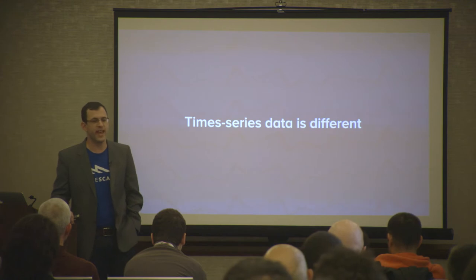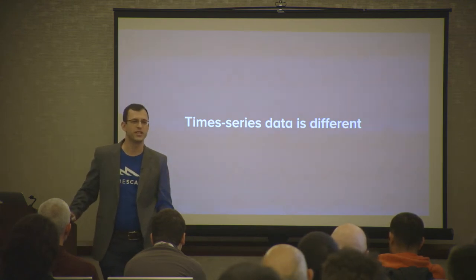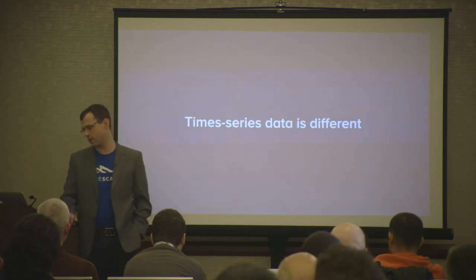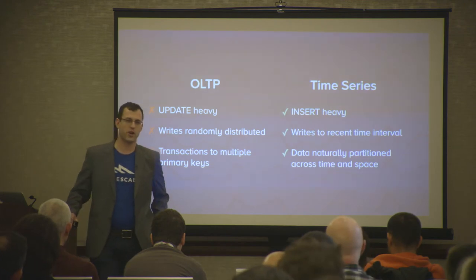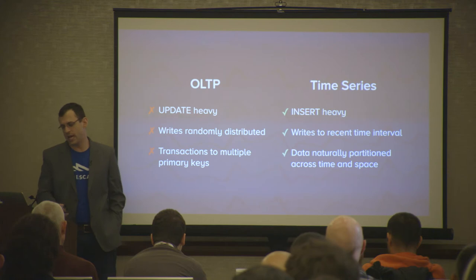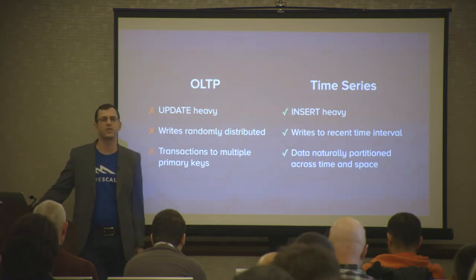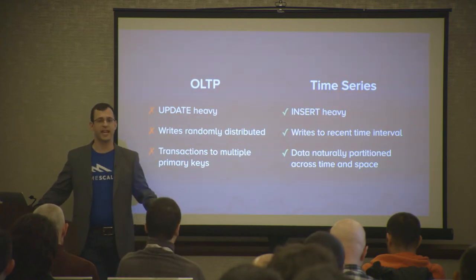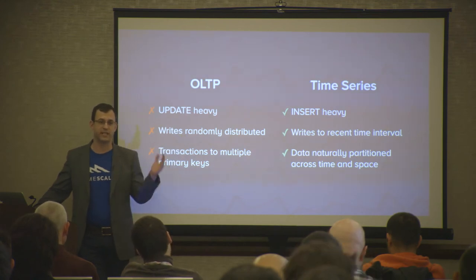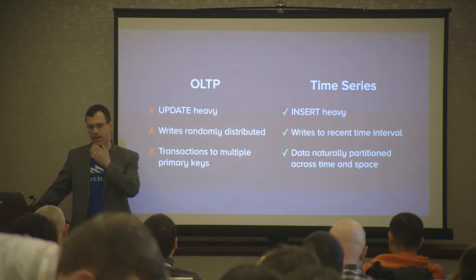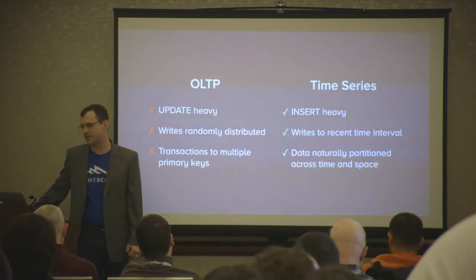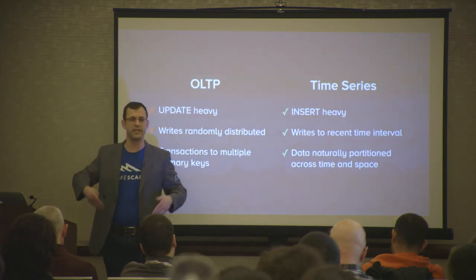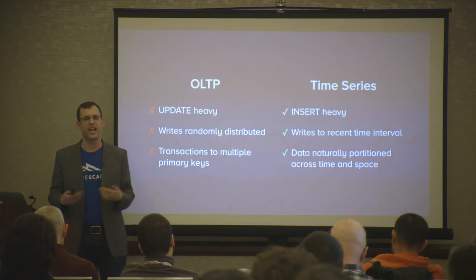This is why truly distributed databases have been hard to build. But time series data is different. OLTP workloads are primarily update-heavy; time series databases are insert-heavy. OLTP writes to random locations; time series typically writes to the recent time interval. With streaming data from 100,000 sensors or financial tick data, most data is the current state of the world. In OLTP, transactions span multiple primary keys; in time series, data is naturally partitioned across both time and space — the sensors themselves form a natural partitioning.